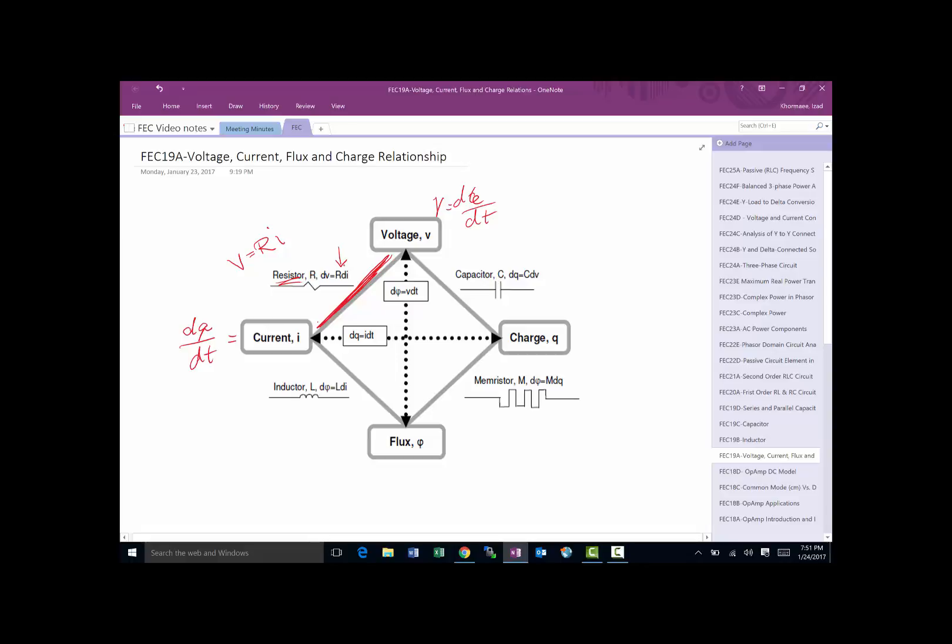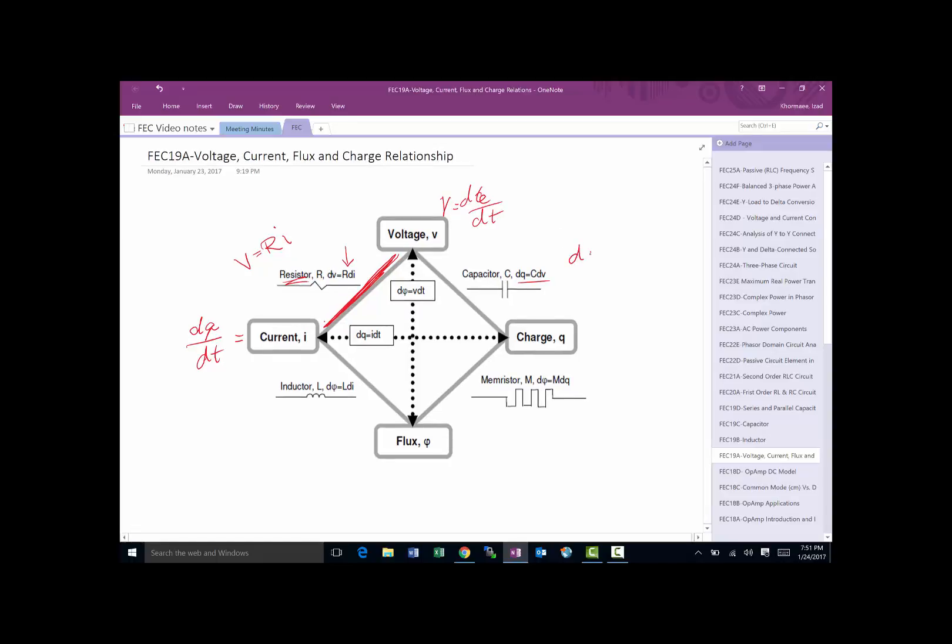A couple of new items we haven't talked about is the relationship between voltage and charge. The change in charge equals C times V. If you write this differently, we can write it as the change of Q with respect to time equals C times the change of voltage with respect to time. This becomes the essence of capacitors.